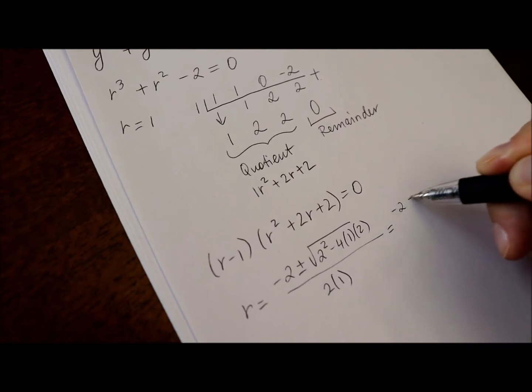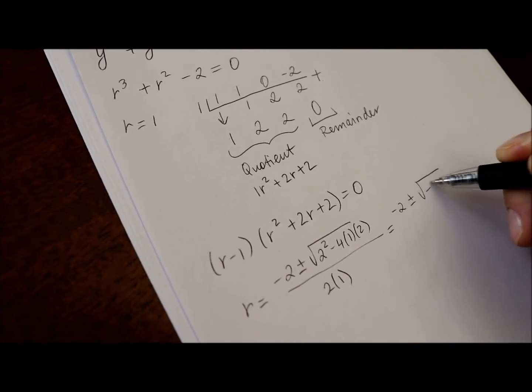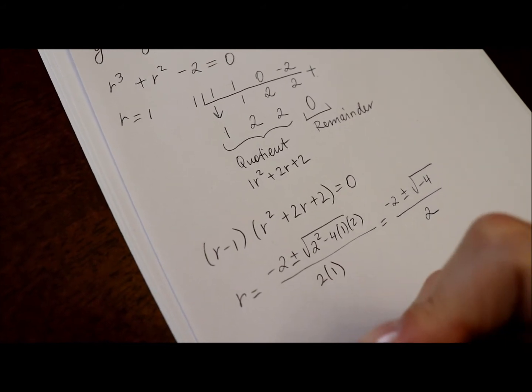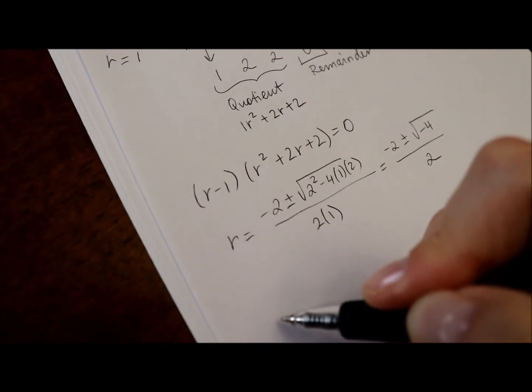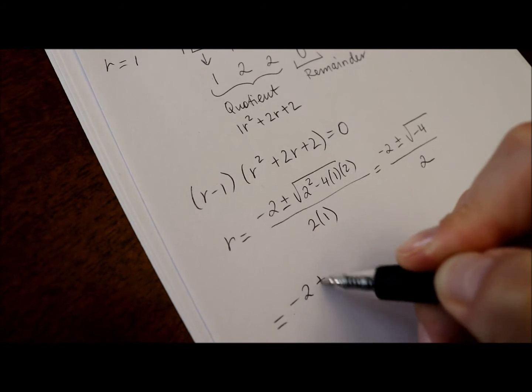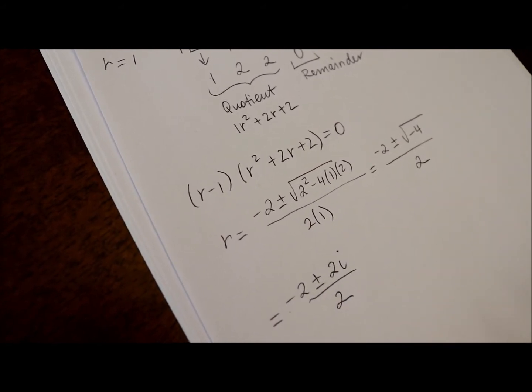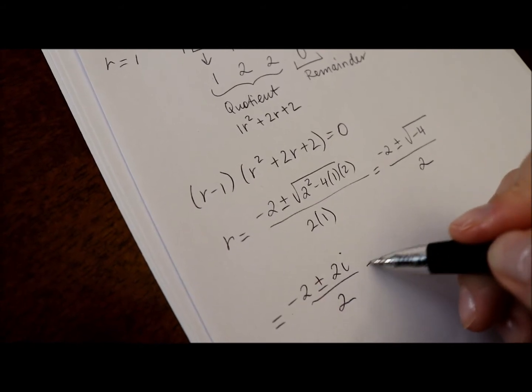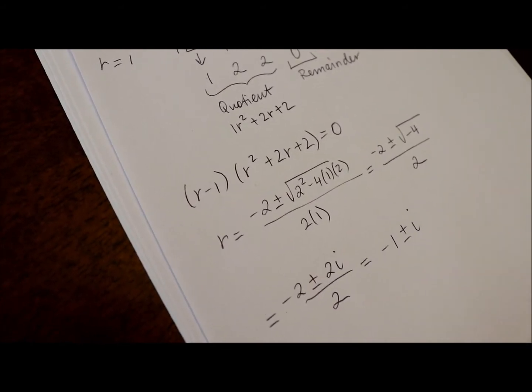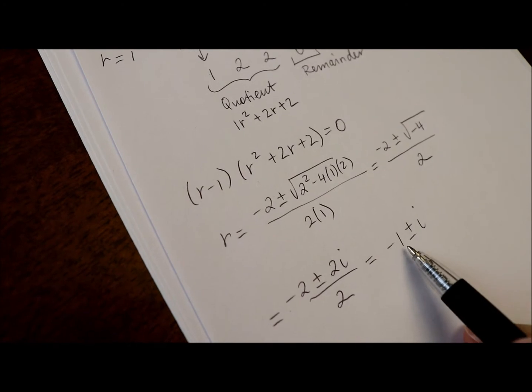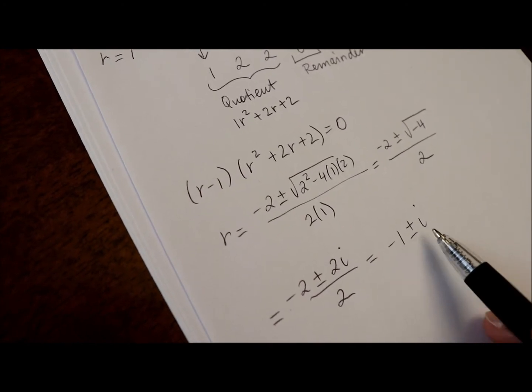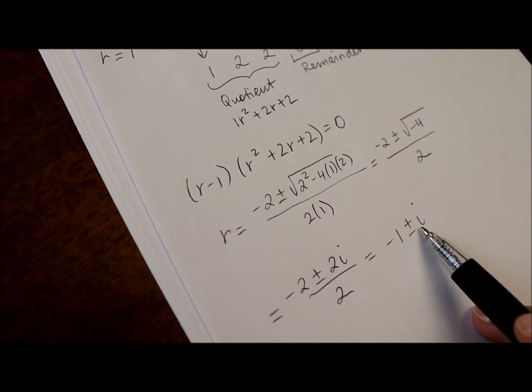Or negative 2 plus or minus square root of negative 4 divided by 2, which equals negative 2 plus or minus 2i divided by 2. And we need to separate real from imaginary part, so that will be negative 1 plus or minus i. That means that the real part of that complex number is negative 1 and the imaginary part is positive 1.